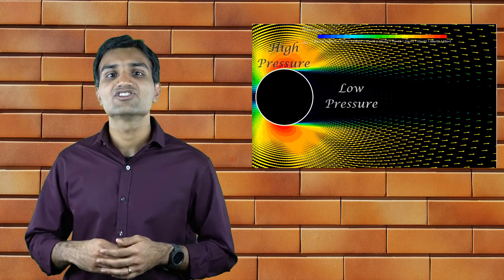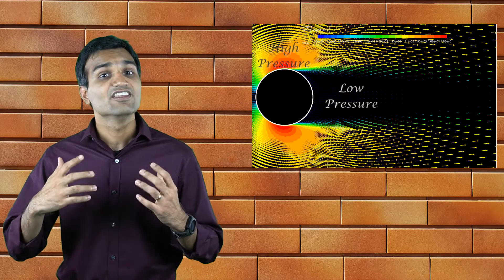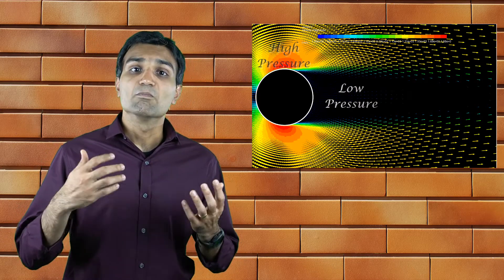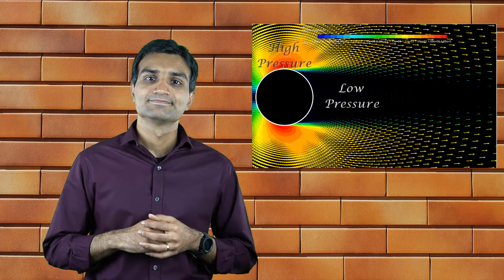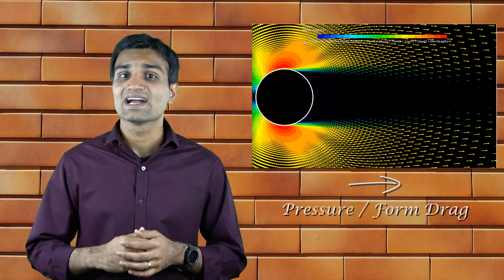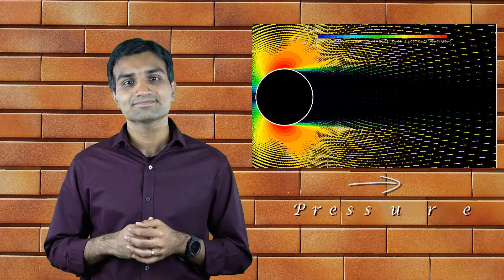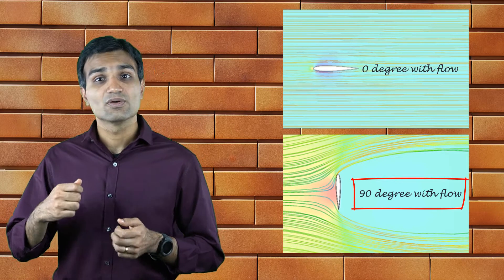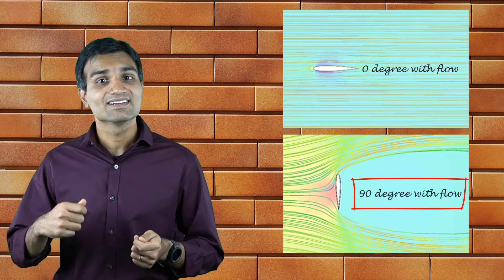With high pressure region in the front and low pressure region at the back, the moving cylinder is being pulled backwards by the fluid. This is the consequence of pressure or form drag on the cylinder. Pressure drag results from normal stress exerted by pressure forces and is dominant in flows around bluff bodies. The greater the size of the wake, the greater is the pressure drag.